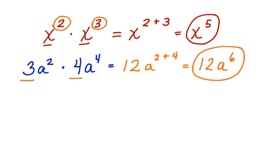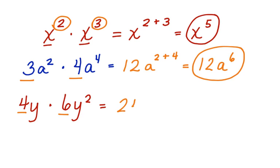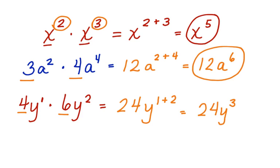Let's look at one more like that. Let's say I have 4y times 6y squared. Again, I'm going to multiply 4 times 6, which gives me 24. And this y over here — it has a 1 there. You may not see it, but it's still y to the first. So I'm going to have y to the 1 plus 2, which equals 24y cubed. This is my answer.